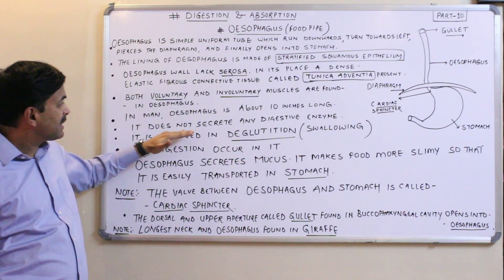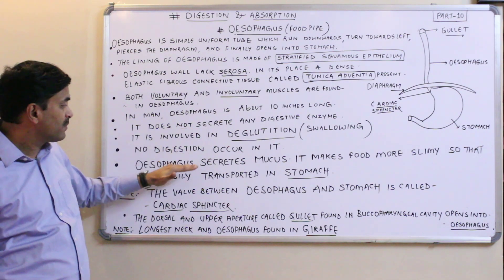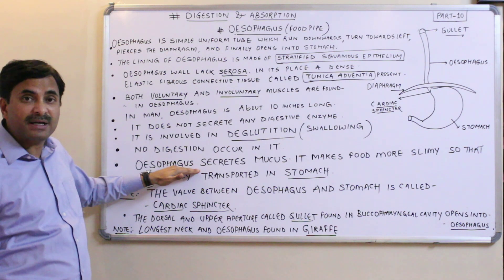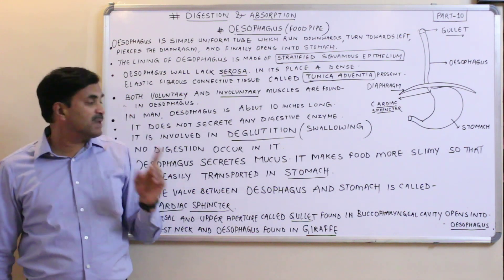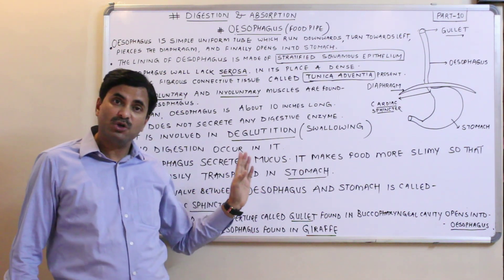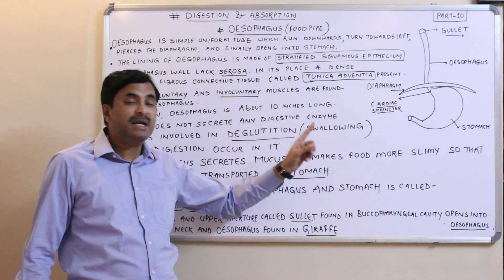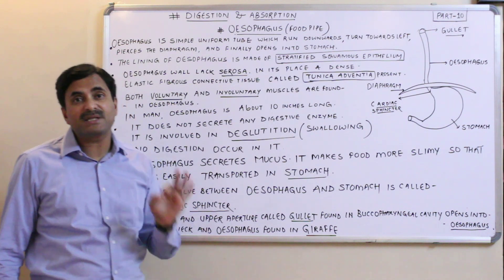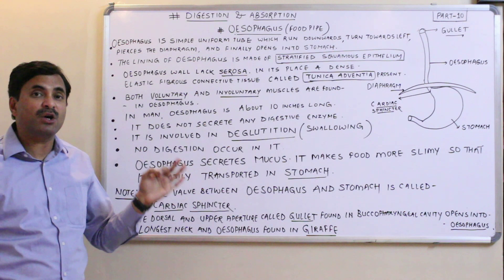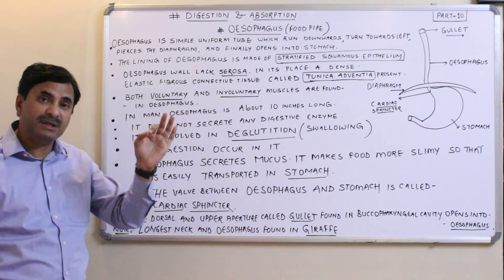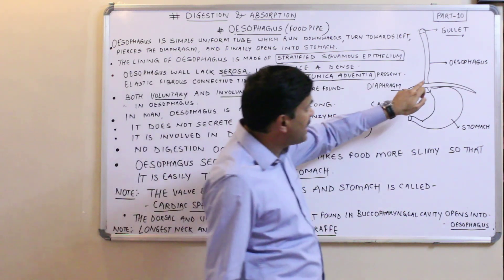Although the esophagus does not secrete digestive enzymes, it does contain mucus glands. These mucus glands secrete mucus, which makes the food more slimy so that it is easily shifted and transported towards the stomach.